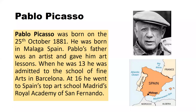Pablo Picasso was born on the 25th of October 1881, in Malaga, Spain. Pablo's father was an artist and gave him art lessons. When he was 13, he was admitted to the School of Fine Arts in Barcelona.